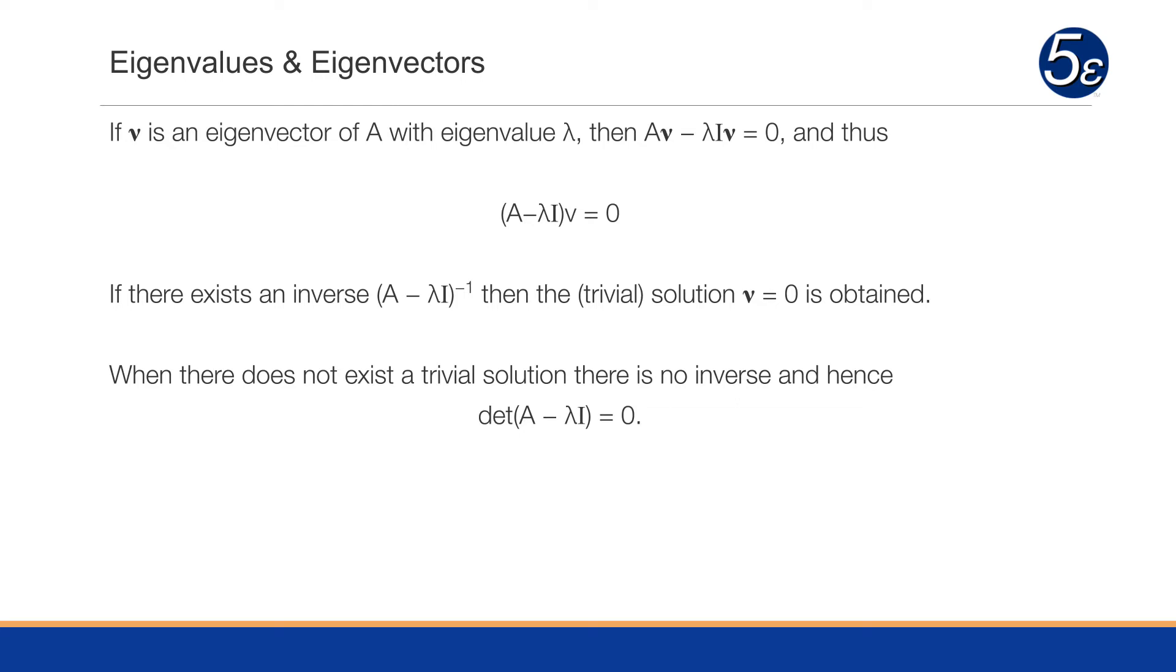If there exists an inverse to that, then the trivial solution nu equals zero is obtained. But when there does not exist the trivial solution, and there is no inverse, we end up with the determinant of A minus lambda I equals zero.